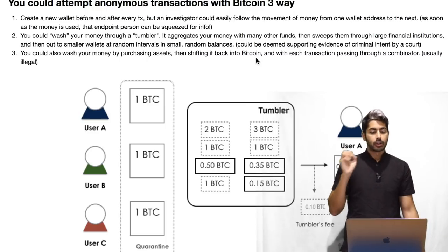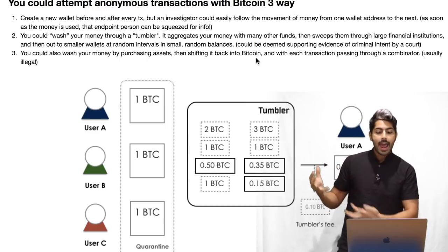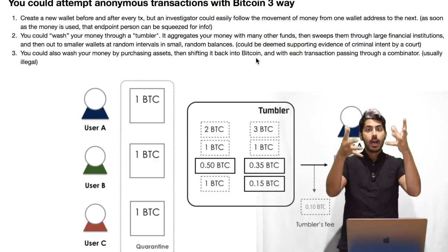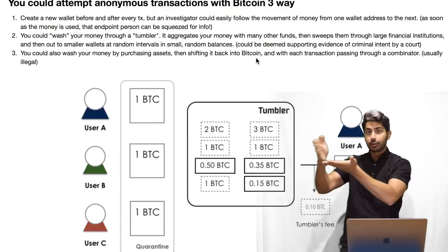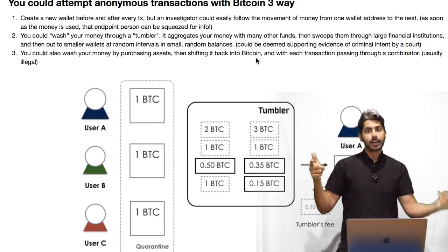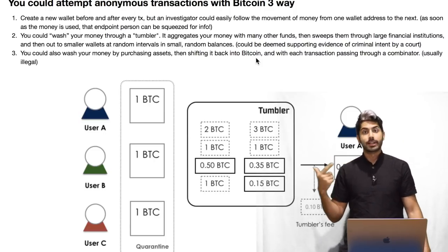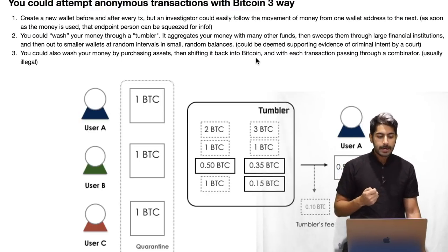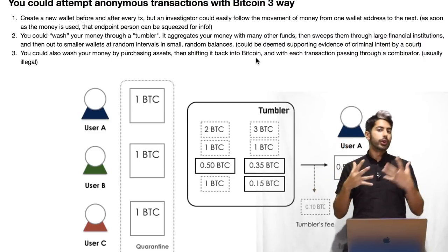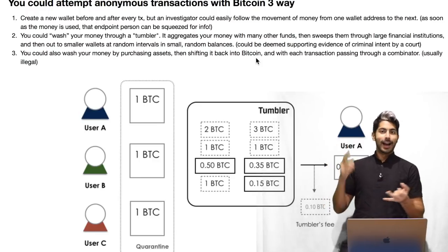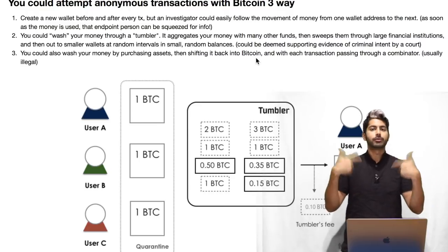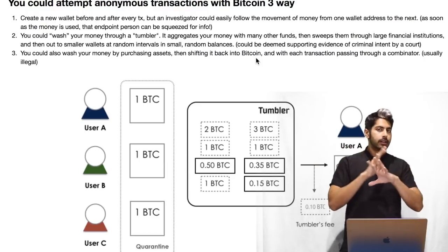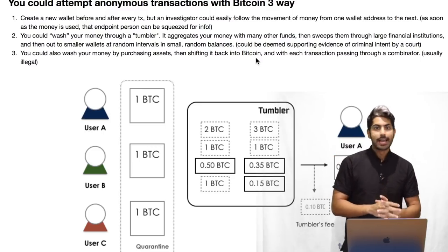Another way is to wash your money through a Tumbler — a service that aggregates your money with many other funds and sweeps them through large financial institutions. Funds are aggregated together, split into little amounts, and sent out through different gateways, making it very hard to tell who originated a transaction. However, in a court of law, this could be deemed supporting evidence of criminal intent. You could also wash money by purchasing real-world assets like a basketball court, a house, or a car, then transferring that money back to Bitcoin — but that is illegal. These are all not good methods.